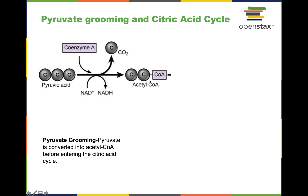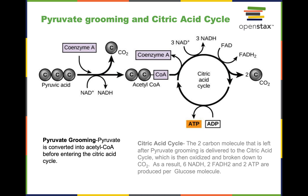So now the molecule is ready to enter the citric acid cycle. Acetyl-CoA comes in and delivers these two-carbon molecules into the cycle, and then coenzyme A comes out. So these two-carbon molecules enter this cycle.